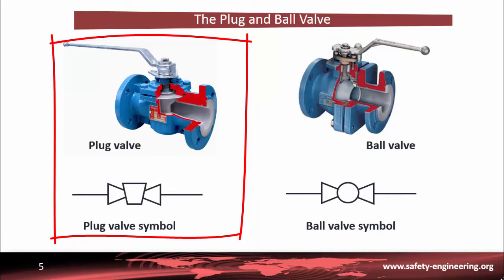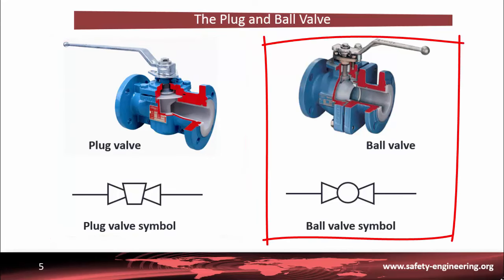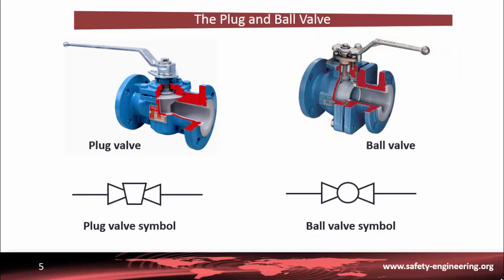Plug valves are similar to ball valves in operation. A ball valve is a quarter-turn rotational motion valve that uses a ball-shaped disk to stop or start flow. When the valve is opened, the ball rotates to a point where the hole through the ball is in line with the valve body inlet and outlet. When the valve is closed, the ball is rotated so that the hole is perpendicular to the flow openings, and the flow is stopped. The advantages are quick quarter-turn on-off operation, minimal resistance to flow, and smaller size than most other valves. The disadvantages are that these valves require a large force to actuate due to high friction, and have a reduced port due to the tapered plug.